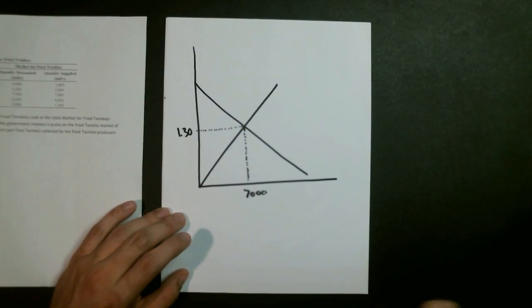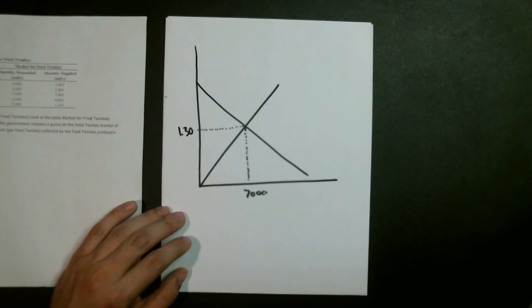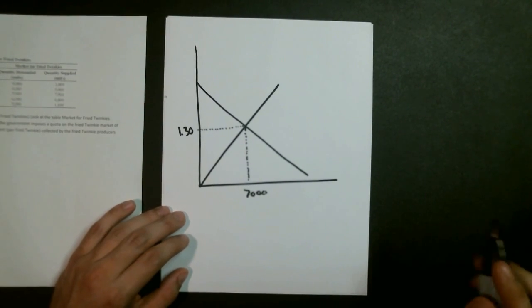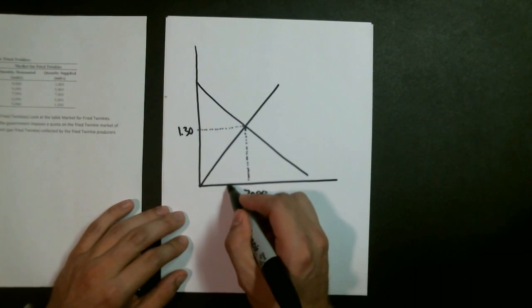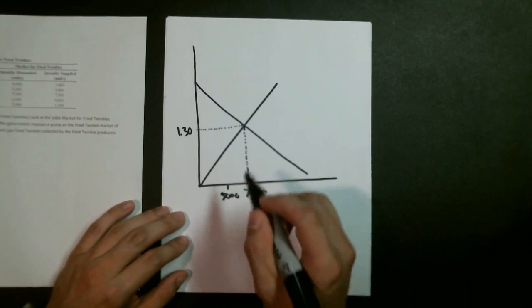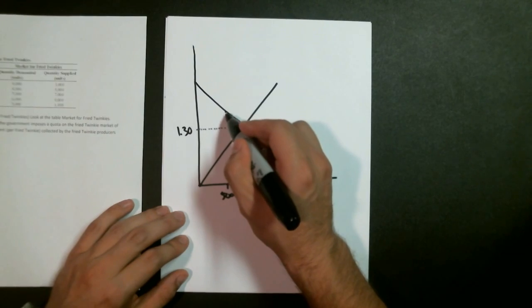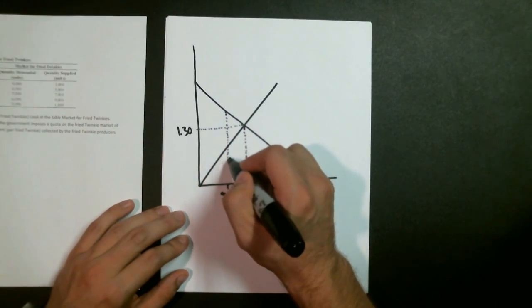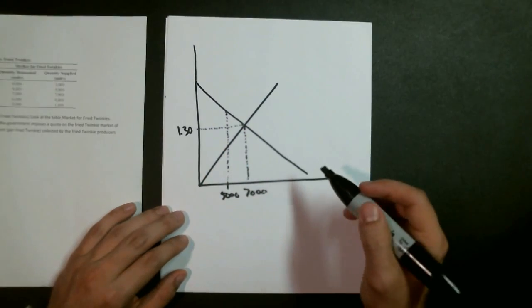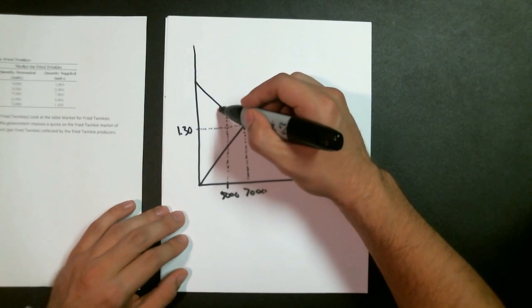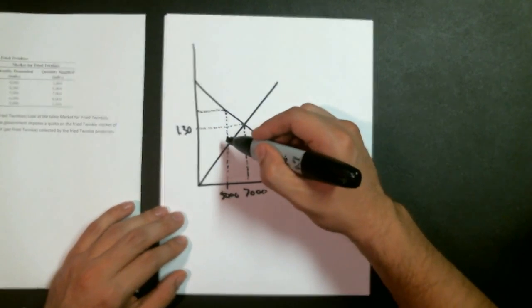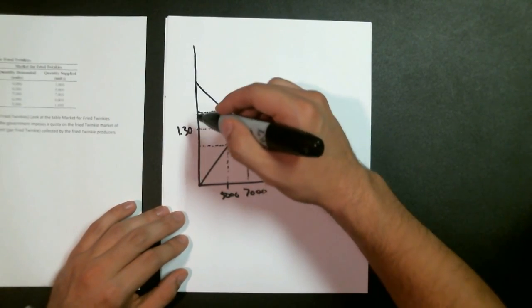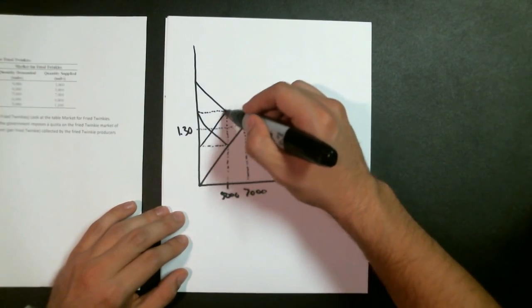Now we reduce the amount that can be produced by the suppliers to 5,000. I'm just going to say this point right here is going to be about 5,000. I'm going to reduce it to this. Now this area right here becomes the total rent.